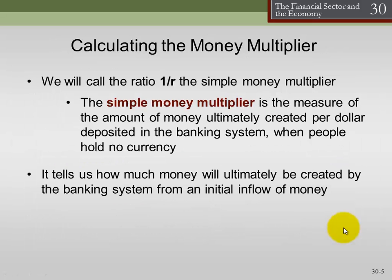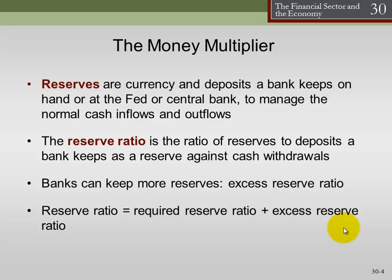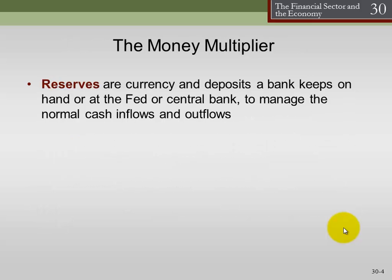Let's go back and look at the mathematics of this money multiplier. First, we define reserves: reserves are the currency and deposits that a bank keeps on hand. What counts as a reserve includes cash on hand — vault cash — and deposits at the Federal Reserve. So total reserves equal total currency on hand plus deposits at the Federal Reserve.